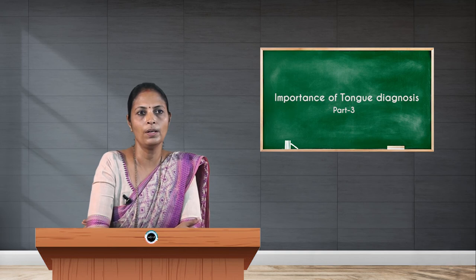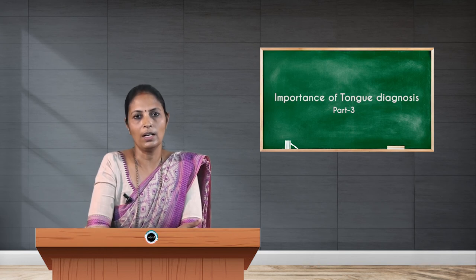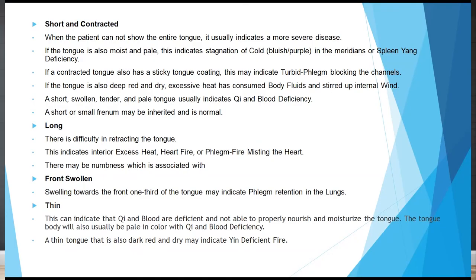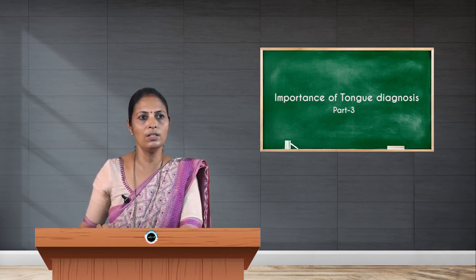A short and contracted tongue indicates more severe disease and is associated with moist pain and stagnation of cold. If the color is bluish, it indicates spleen deficiency. A tongue that is too long — with difficulty in retracting backward — indicates excess. If the front part is swollen, it indicates disturbance in lung energy. A very thin and moist tongue with pale color indicates qi and blood deficiency.